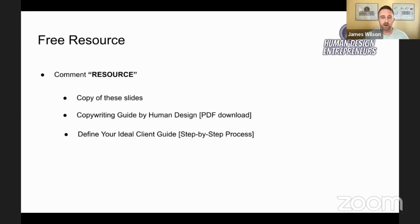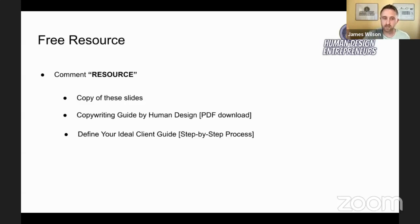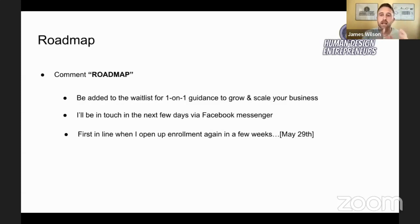We're getting to the half hour for our time here. After this live stream I will reply to the comments, so any questions you have, you're welcome to put there — make sure to include your human design type. Comment the word 'resource' in the comments right now and I will send you a copy of these slides, a copywriting guide by human design as a PDF download, and then a really helpful step-by-step process to help identify your ideal client. The way I can help you one-on-one is through a systematic 12-week, 90-day roadmap. Currently I don't have any openings for one-on-one guidance, but you can be added to the waitlist — comment 'roadmap' and I'll be in touch to see if this would be a good opportunity for you.